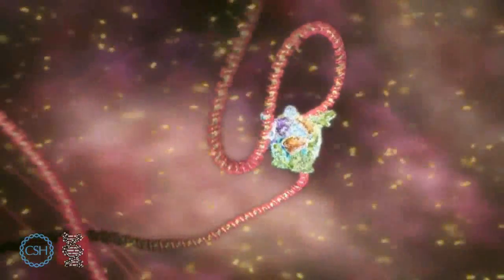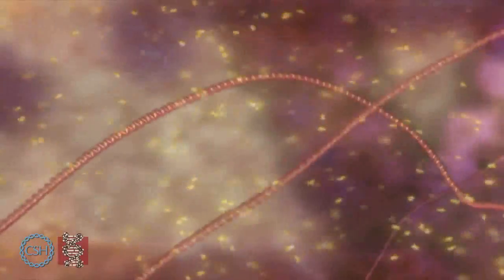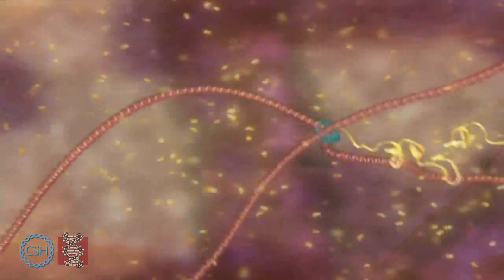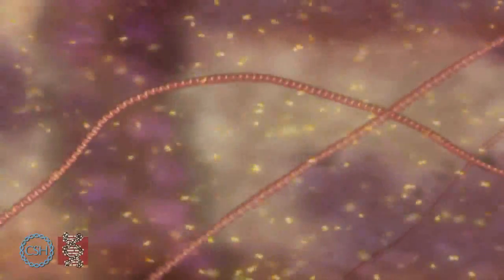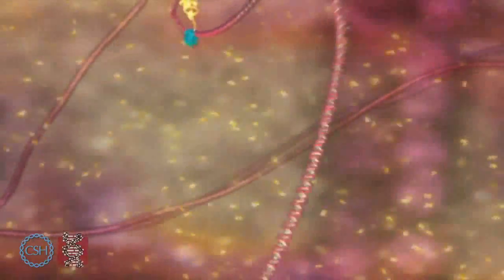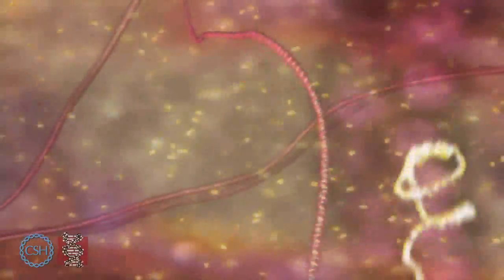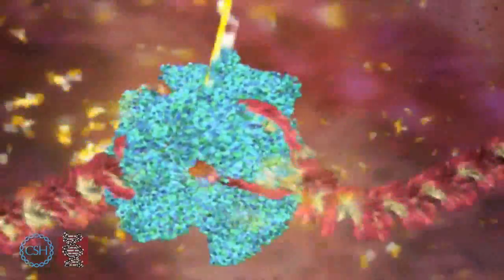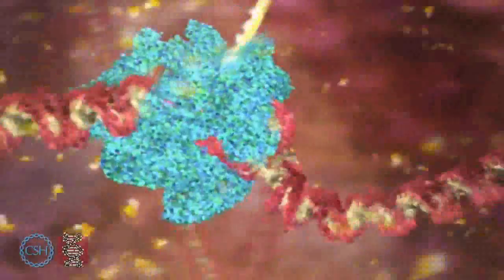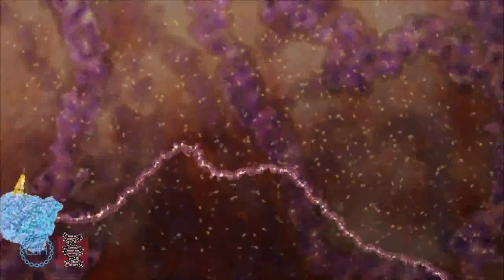The blue molecule is unzipping the double helix and copying one of the two strands. The yellow chain sneaking out of the top is a close chemical cousin of DNA called RNA. The building blocks to make the RNA enter through an intake hole. They are matched to the DNA letter by letter to copy the gene.